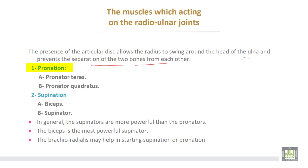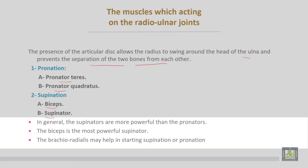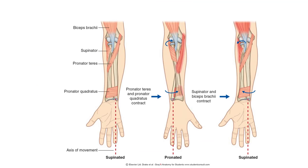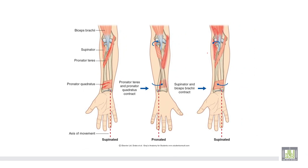Pronation is performed by pronator teres and pronator quadratus; supination by biceps and supinator muscles. Generally, the supinators are more powerful than the pronators. The biceps is the most powerful supinator muscle. The brachioradialis may help in starting supination or pronation. This is the pronator teres and this is the pronator quadratus — for pronation — and supinator muscle or biceps for supination.